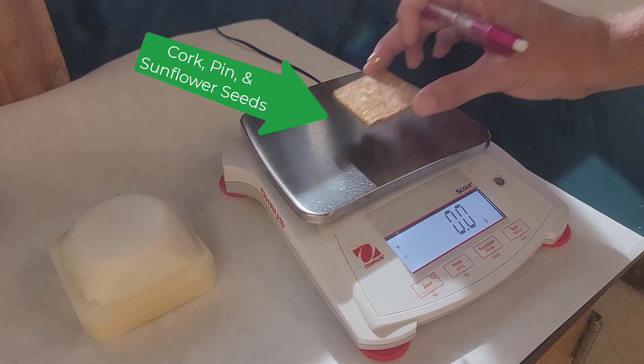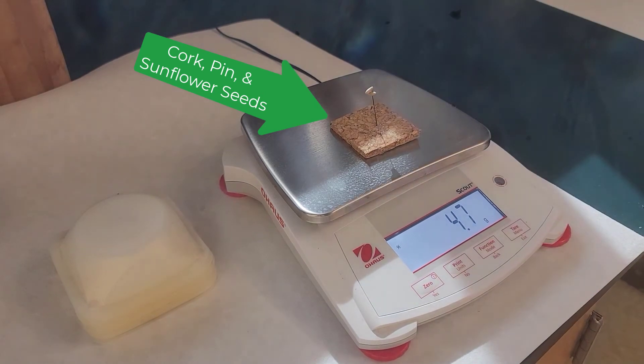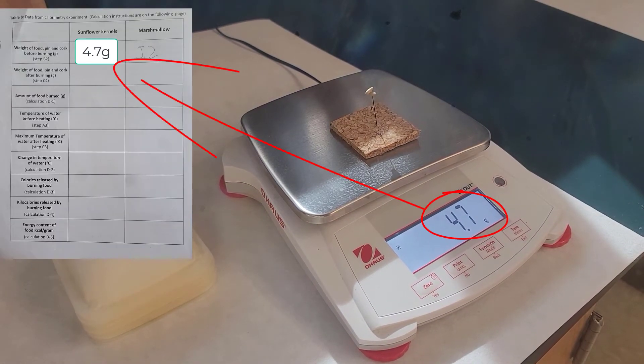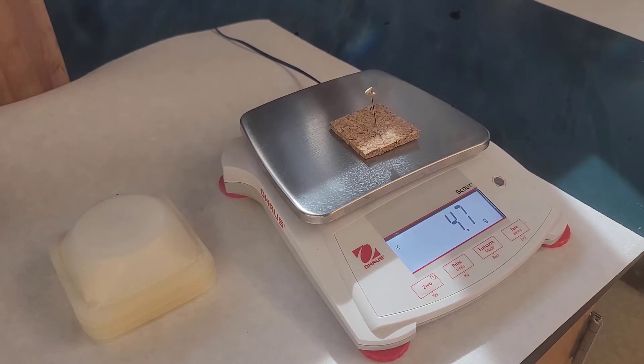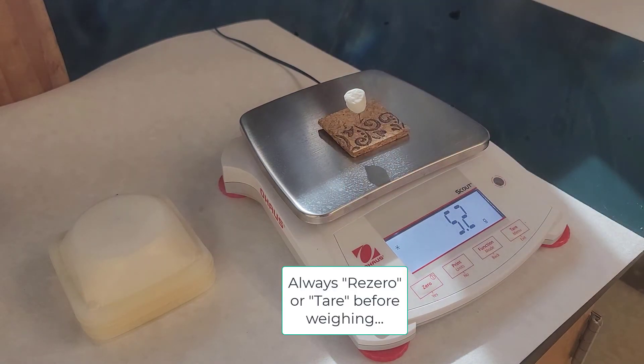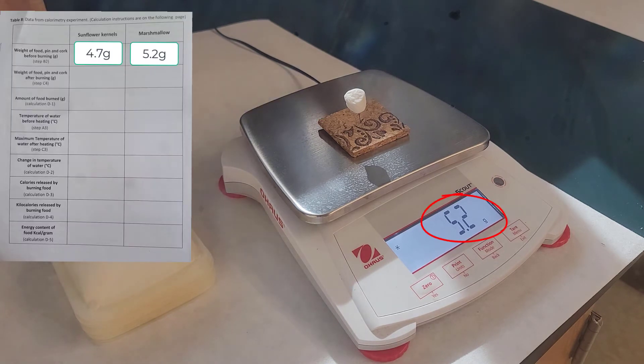We're going to carefully place two sunflower seeds on top of that pin, and then we're going to weigh that whole object—the cork, the pin, and the sunflower seed. Then we're going to do the same thing with a marshmallow. We'll take a marshmallow, put it on top of the pin, and then weigh that.